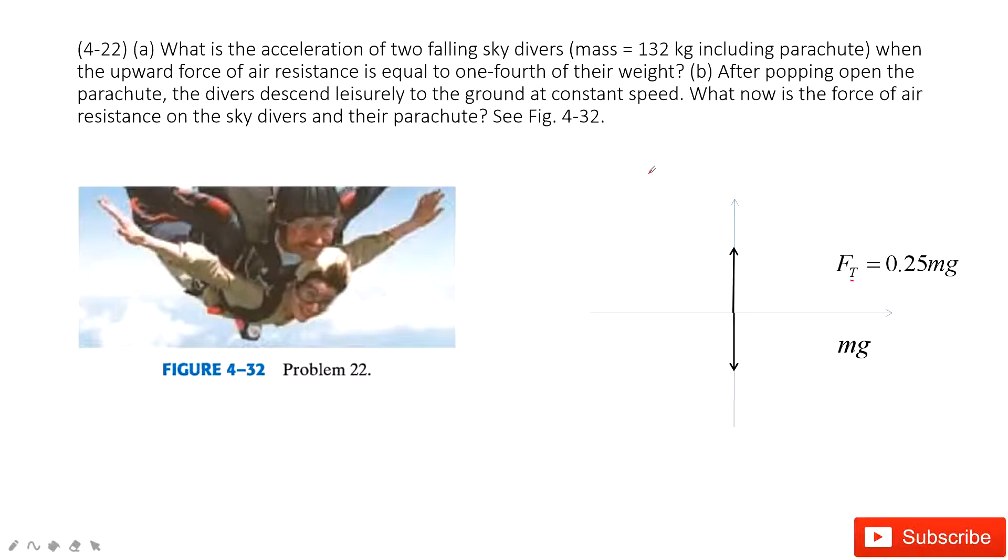The next question asks you for the force of air resistance when this object falls at constant speed. What does that mean? The velocity is constant. Acceleration must be zero. So in this time, the acceleration is zero. That means the force is balanced. Ft should equal mg.